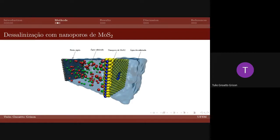Here we have a representation of the simulated system. We have a rigid graphene piston and a saltwater tank, followed by a molybdenum disulfide membrane that separates the tank with desalinated water.